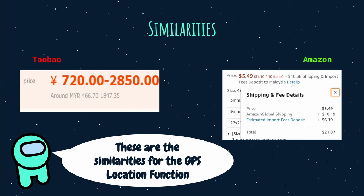The biggest similarity between both websites is that they use GPS, or Global Positioning System, very effectively. Even though both websites use different currencies — US dollars for Amazon and Taiwanese dollars for Taobao — they use the device's GPS to locate the user's address and identify their country, then exchange the currency accordingly. For example, since the speaker is from Malaysia, prices are converted to Malaysian Ringgit.